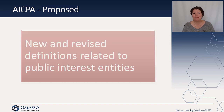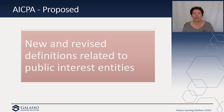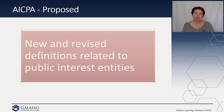The AICPA did not issue anything new, but they did propose an ethics standard regarding new and revised definitions related to public interest entities. We previously did a blog on this to explain why they're doing this and some of the impact. It's not really for the audit side of the house — it's for the other engagements done under the AICPA standards for these public entities, so you can take a look at that previous blog.